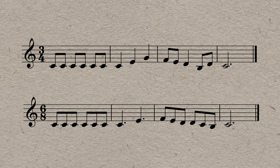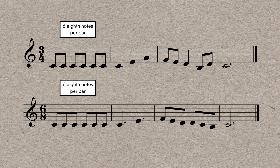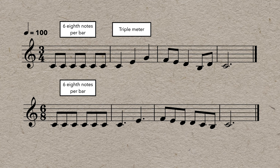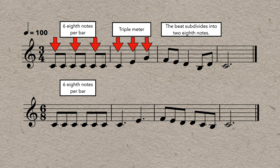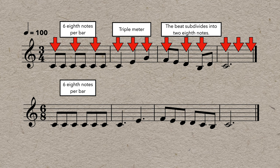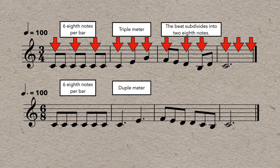And that triplet feel is what makes 6-8 different from 3-4. Both have 6 eighth notes in a bar, but 3-4 is usually used for music in triple meter. It feels like it's in 3 and the tempo is defined by the quarter note, and each beat subdivides into 2 eighth notes. 6-8 is used for music in duple meter. It feels like it's in 2 and the tempo is actually defined by the dotted quarter, and the beat subdivides into 3 eighth notes.